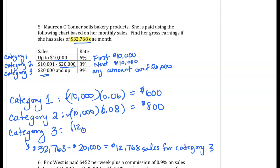So that $12,768 in sales gets paid at the 9% rate. And if we multiply those together, $1,149.12.